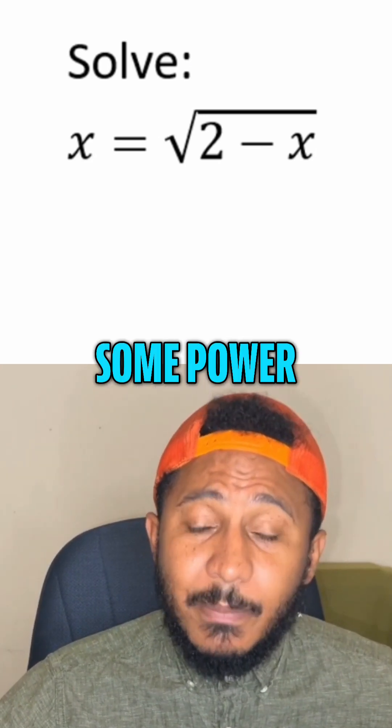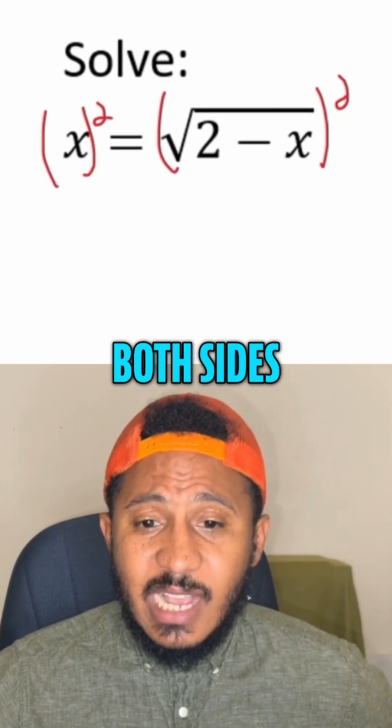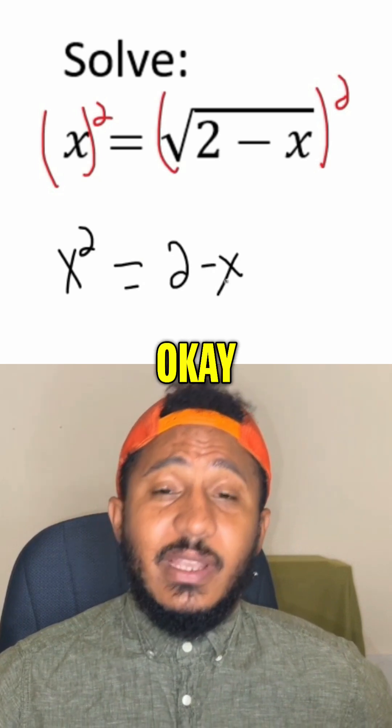And so then we raise both sides to some power. In this case, we would square both sides. So in squaring both sides, we get x squared equals, and then squaring the right-hand side, we get 2 minus x.